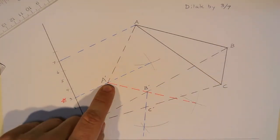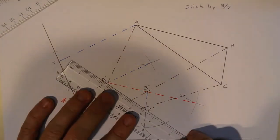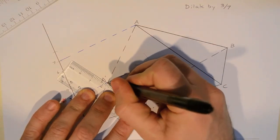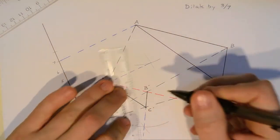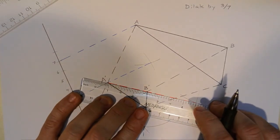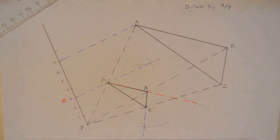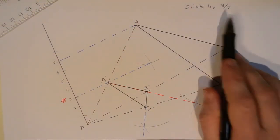So there's my A prime, my B prime, and my C prime. And I can go ahead and finish the construction by drawing those sides in. I like to connect the points so I can see the final triangle. Here's A prime, C prime. There's B prime, C prime. And there is A prime, B prime. So this new triangle has been reduced by a factor of 3 sevenths.